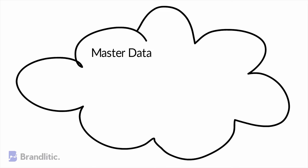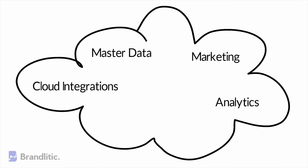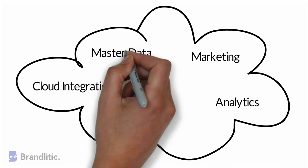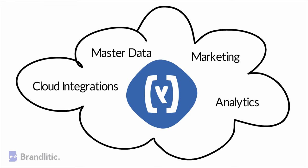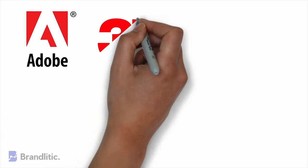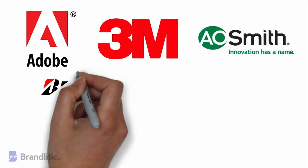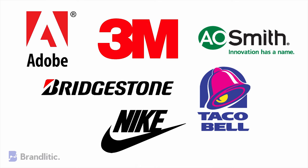Hybris comes with a lot of pre-built system features like master data, marketing, analytics, and cloud integration, which are not present in many of its competitors. Hence, you can actually kickstart your e-commerce empire quite easily without losing much time for planning. That's the reason why Fortune companies like Adobe, 3M, AO Smith, Bridgestone, Taco Bell, and Nike use it.